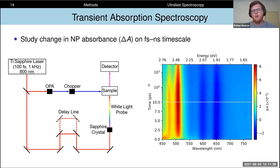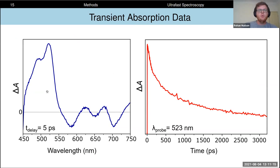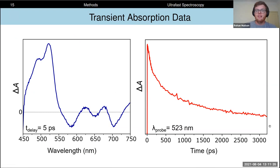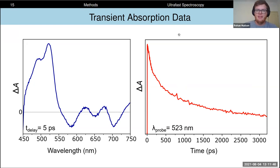Trying to wrap your head around two-dimensional datasets can be difficult, so we can slice this data in different ways. We can consider a single delay time and look at the change in absorption over the entire visible spectrum — this is what we call a transient absorption spectrum, shown on the left. Alternatively, we can look at a single wavelength and monitor how the change in absorption varies over our delay time window to give us a kinetic trace. So bearing this in mind, let's look at some transient absorption data of our crystalline TIPS pentacene nanoparticles.